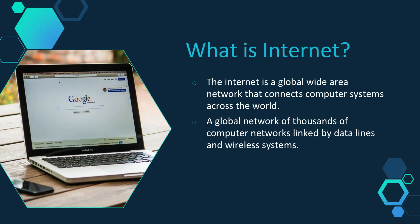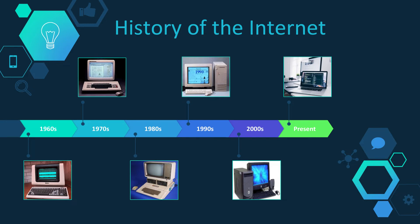Here is a brief timeline on the history of the internet. In the 1960s, the internet began as a means of government research to share data.